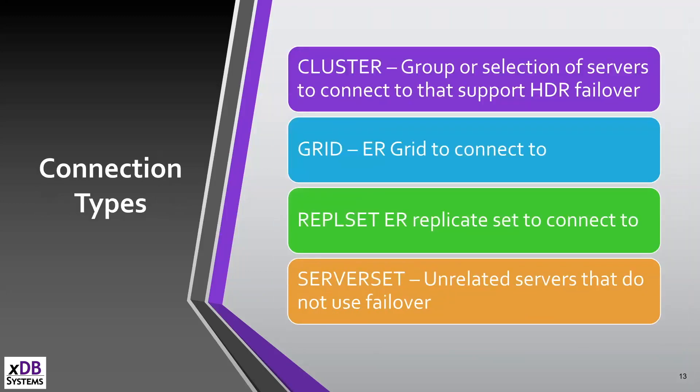The connection types: I showed you 'cluster' in the example — if you're doing HDR, you need to use cluster. There's 'grid' for grid connections, 'REPL set' for traditional Enterprise Replication without grid, and 'server set' if you do not have failover and are just pointing straight to a server or standard group without HDR failover.